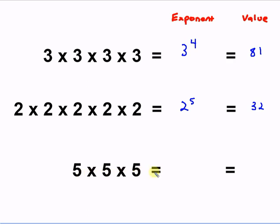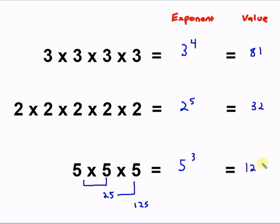Then we have 5 to the 3rd power. 5 times 5 is 25, and 25 times 5 is 125. And that is most of what we're going to do with our exponents.